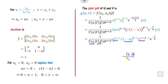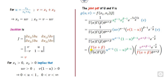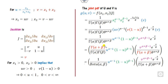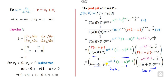Since we have gamma(α) and gamma(β) appearing, and we know that gamma(α)·gamma(β) divided by gamma(α+β) is the beta function B(α,β), if we multiply and divide by gamma(α+β), we can separate the expression into a part depending only on u and a part depending only on v.